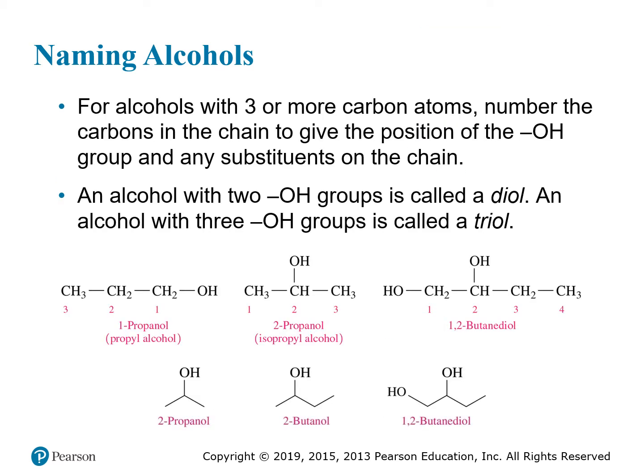For alcohols with three or more carbon atoms, you need to include a number to give the location of the OH group, and this works the same way as it did with double bonds, triple bonds, and other substituents. We also have alcohols that sometimes have two OH groups, called diols, which require two numbers. You could even have three OH groups, called a triol, requiring three numbers.